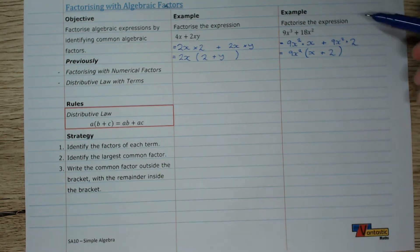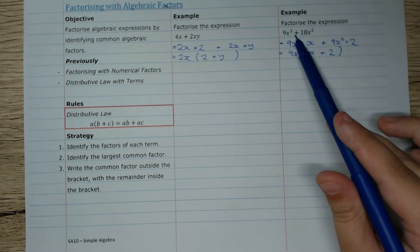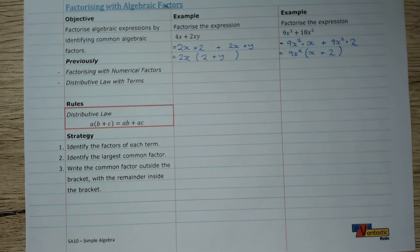You can check that by expanding 9x squared out into the bracket and you'll find it's exactly the same expression. So we can factorize by pulling out algebraic factors as well as just numerical factors. And that's how you do it.